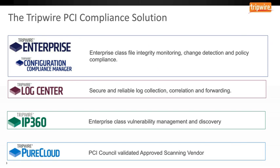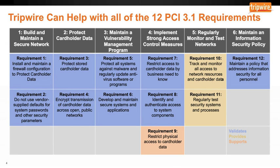You've all heard of Tripwire — yes, it's file integrity monitoring. That's what we've been known for and have built our reputation on. We also have other solutions that fulfill the PCI requirements for log aggregation, correlation, and vulnerability management. With our solution set, we can help with all 12 PCI requirements. This slide uses blue to show areas where we help validate PCI, yellow where we provide information, and orange where we support.